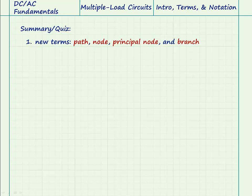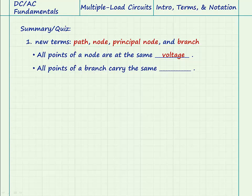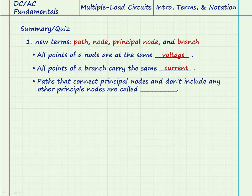So, to summarize, The defining characteristic of a node is that all points of a node are at the same voltage. The defining characteristic of a branch is that all points of a branch carry the same current. And paths that connect principal nodes and don't include any other principal nodes are called branches.